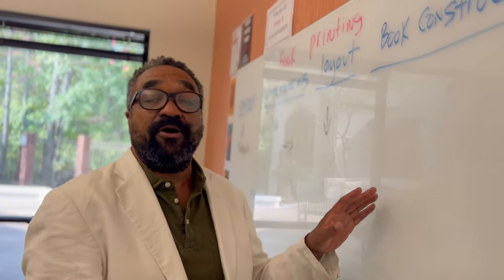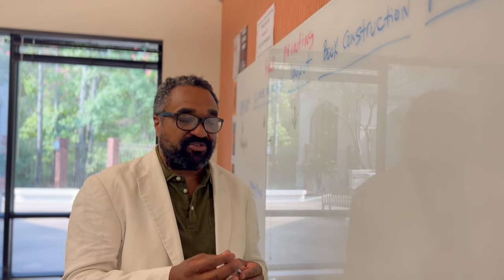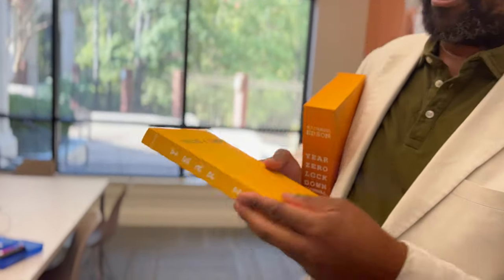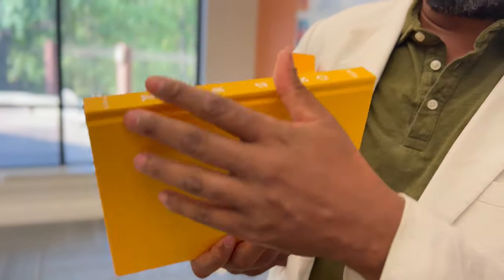And then we move on to the book construction. And when I talk about the book construction, I'm talking about, this is an example. This is a beautiful book we just did, Richard Edson. I mean, slipcase. Look at this. Two-book set. And then with Richard Edson's book, like I said, this is a hardback, hardbound book.